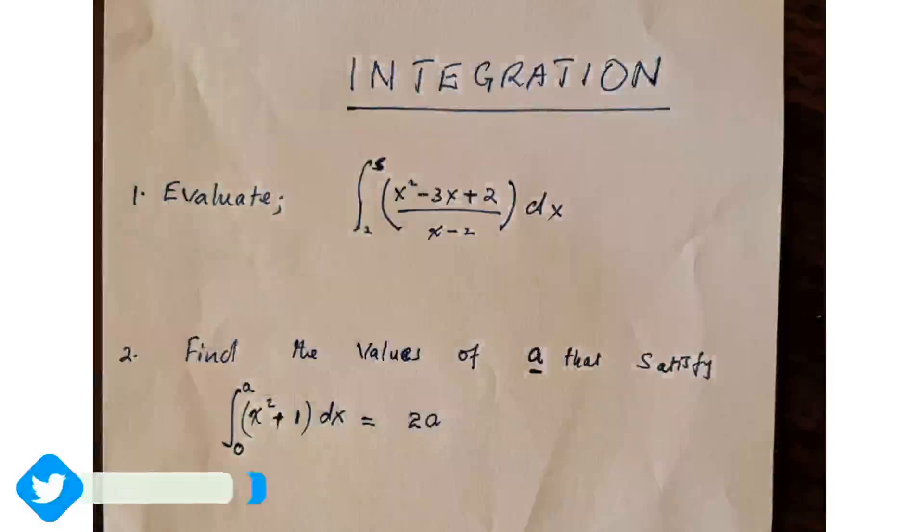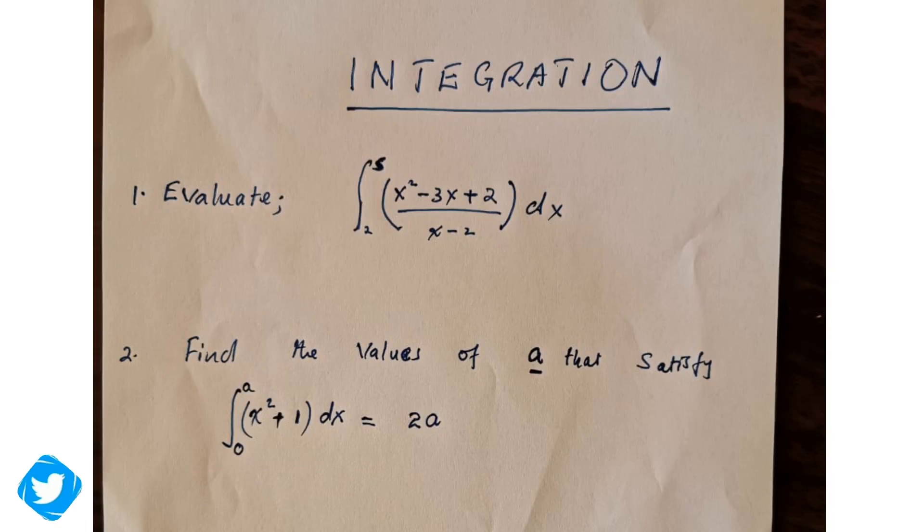Finally, find the value of A. That's question number 12. Find the value of A that satisfies the limits A and 0 of x squared plus 1 dx equals to 2A. I want us to be very careful here. It's just a matter of being keen. We first of all need to integrate this.